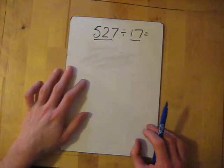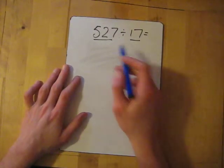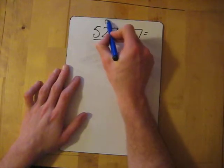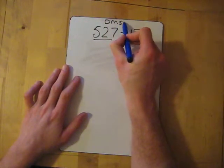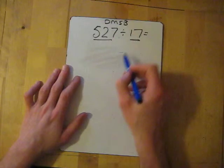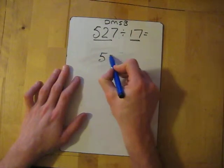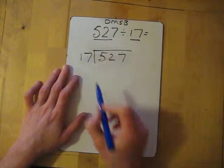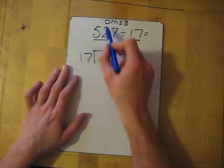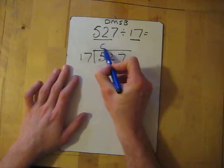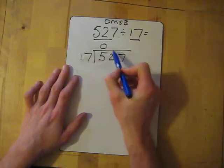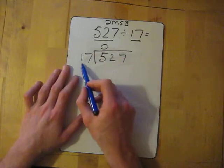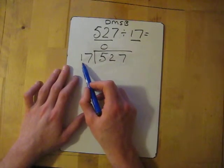Let's have a go and do a couple examples. I've got 527 divided by 17. Does McDonald's Sell Burgers - Divide, Multiply, Subtract, Bring down. So let's set up 527 divided by 17. 17 into 5 doesn't go, put a 0. 17 into 52 - we're not sure how many times it goes in, so let's have a guess. I'm going to say 4 times potentially.